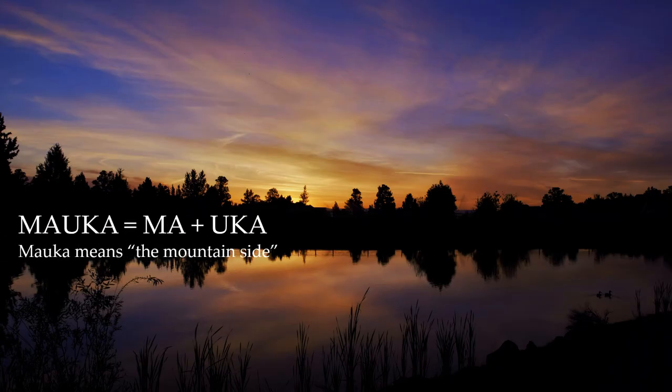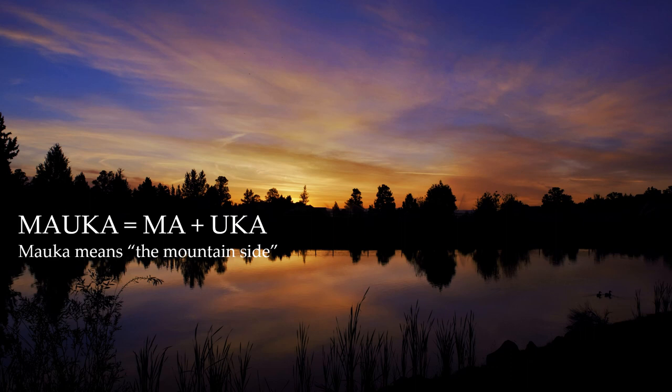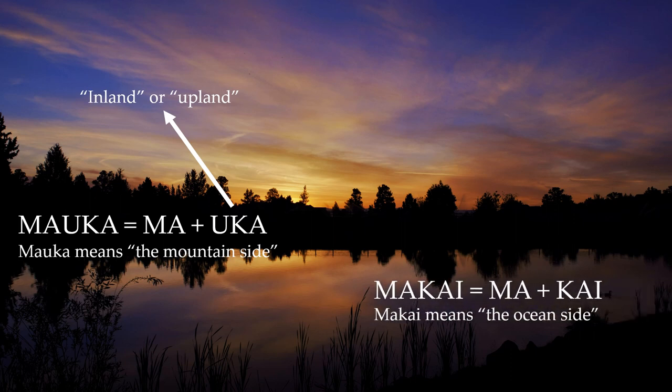Let's see where these two words come from. Mauka comes from ma- plus uka. Ma- can be a word that describes adjectives or is used in location, meaning 'at somewhere.' And uka means inland or upland. Likewise, makai: ma- is again the same prefix, and kai means the sea or the ocean.